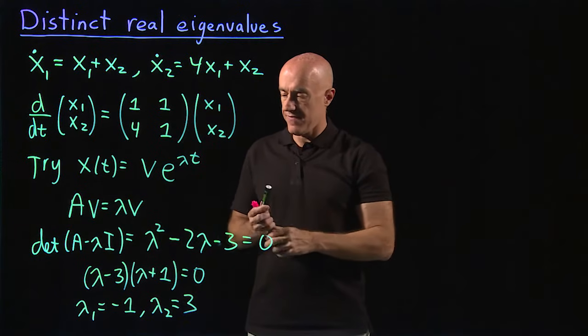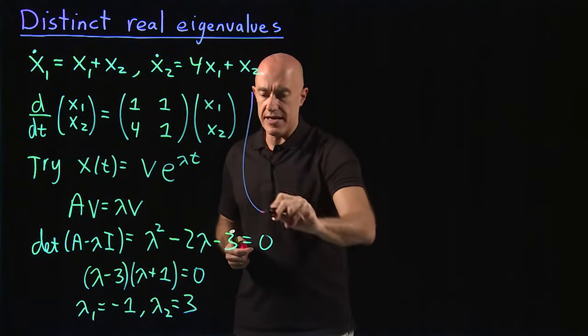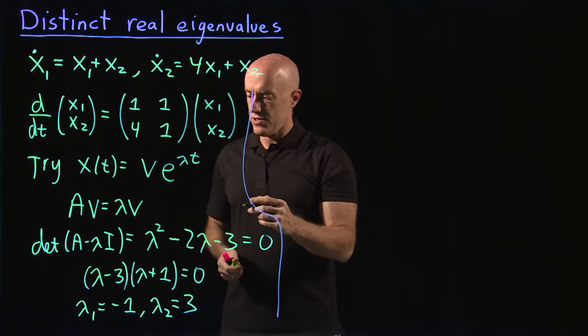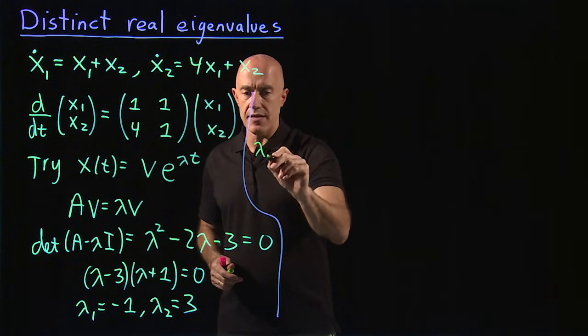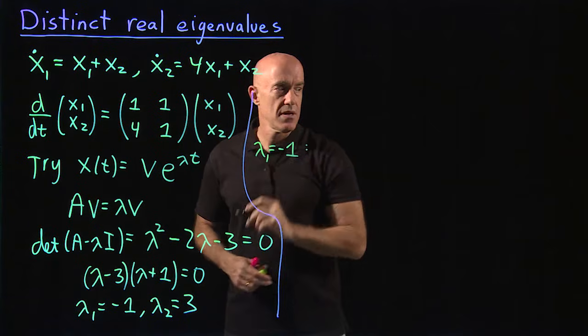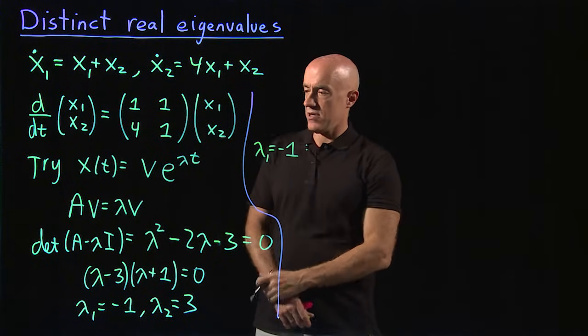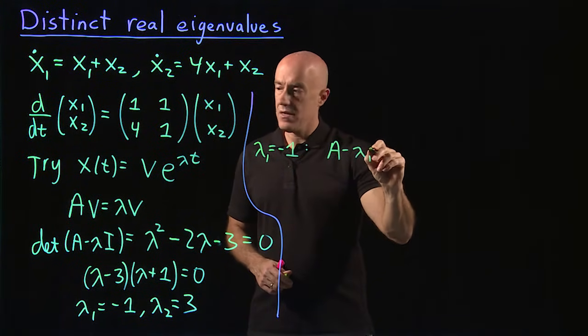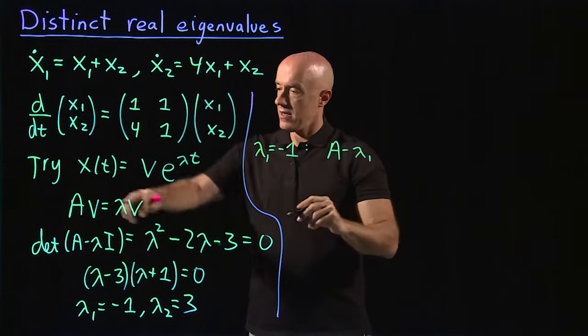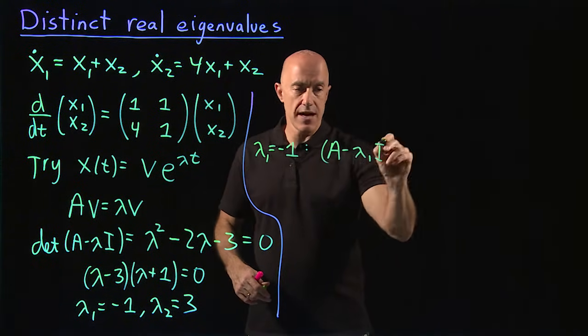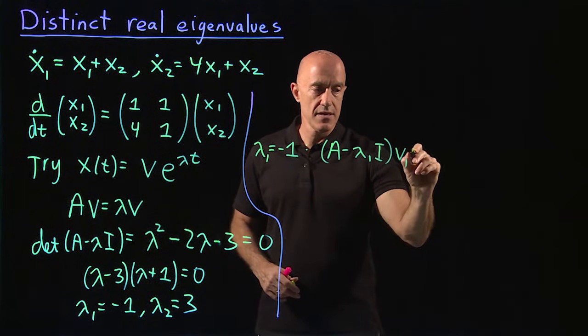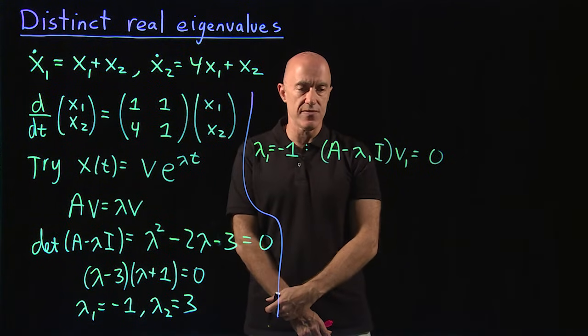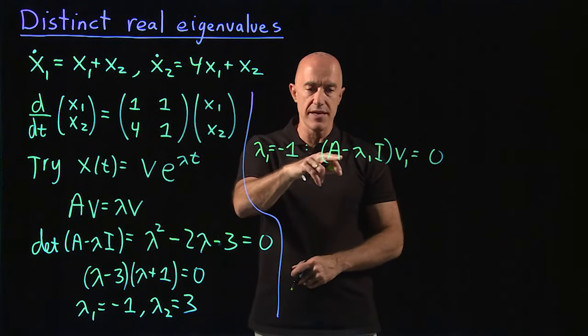Once we get the eigenvalues, we need to find the eigenvectors. To do that, we look at each eigenvalue in turn. So if we start with lambda 1 equals minus 1, then the eigenvector comes from A minus lambda 1 I times the first eigenvector v₁ equals 0. That's the equation for the eigenvector v₁.